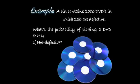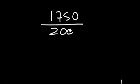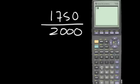A bin contains 2,000 DVDs in which 250 are defective. What's the probability of picking a DVD that is non-defective? There are 1,750 non-defective DVDs out of the 2,000 DVDs. Numerically, the answer is 0.875.